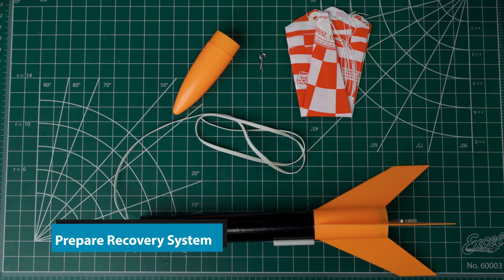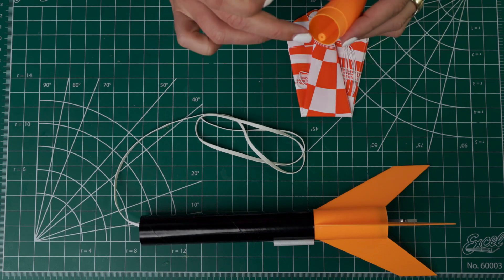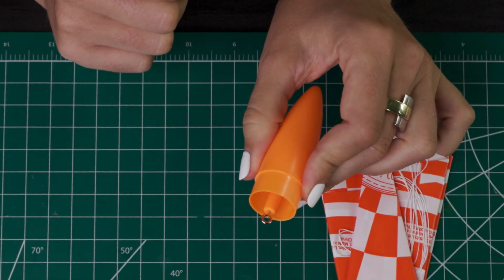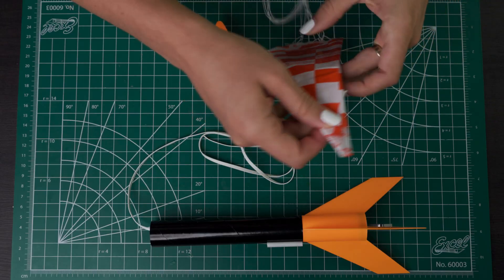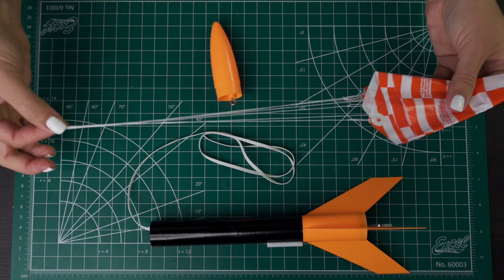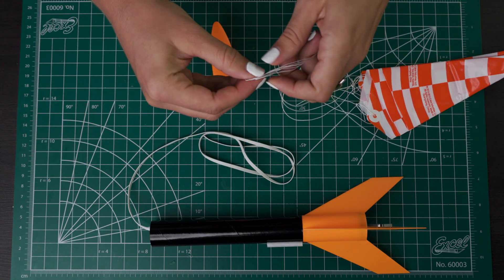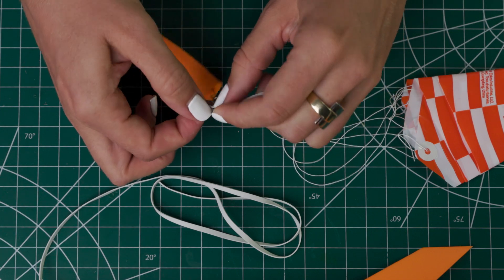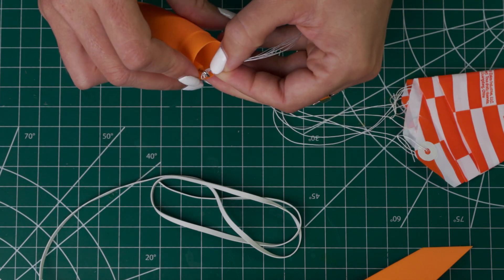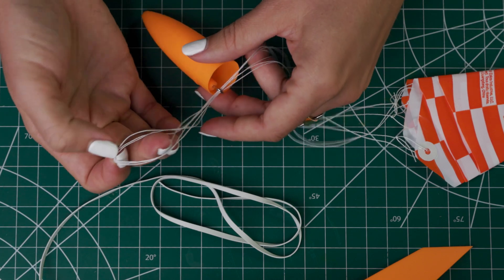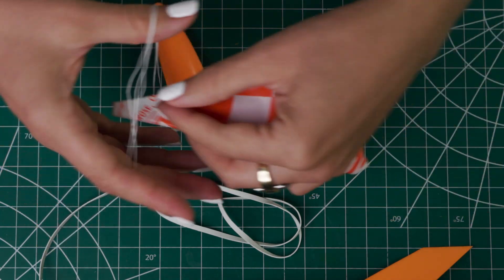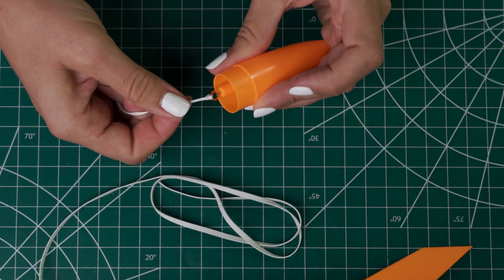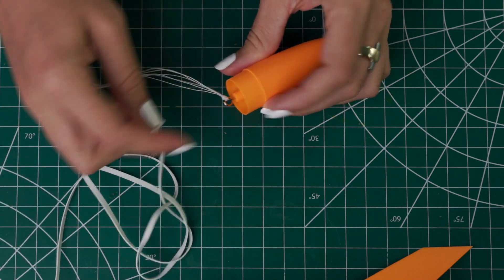Now we're going to prepare the recovery system. So take your nose cone and this little screw and put it in the hole here in the nose cone. Then we'll attach the parachute to that. So open up your parachute, take your shroud lines. These are very easy to get tangled, so try to keep them straight and together. And we'll take all three of these loops and we'll put them through the hole in that screw. Then pick up the three loops on the other side and put the parachute through those loops.